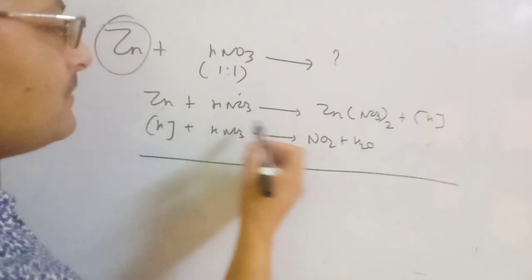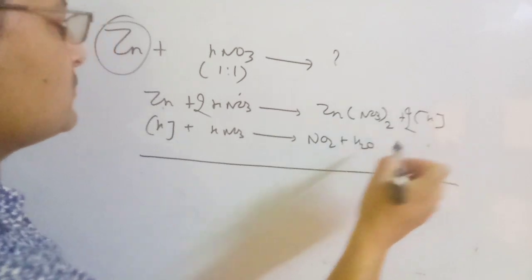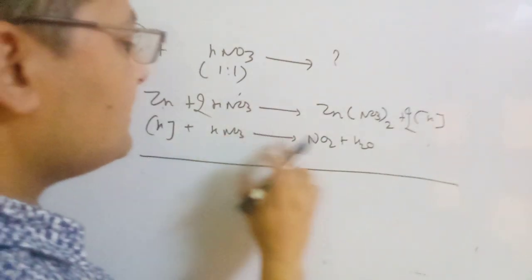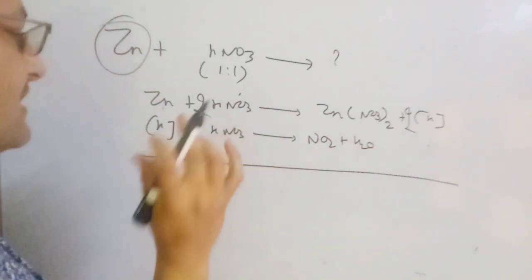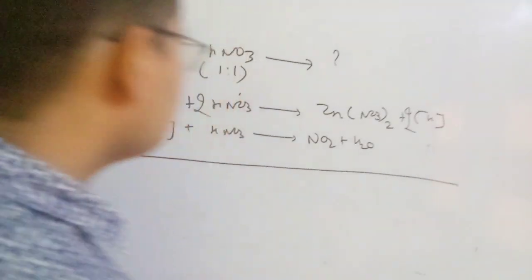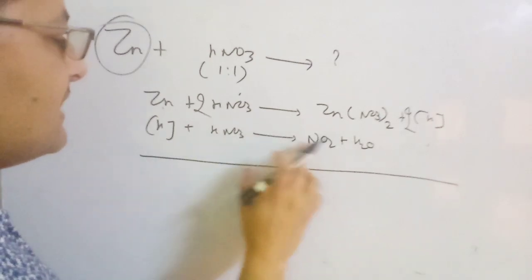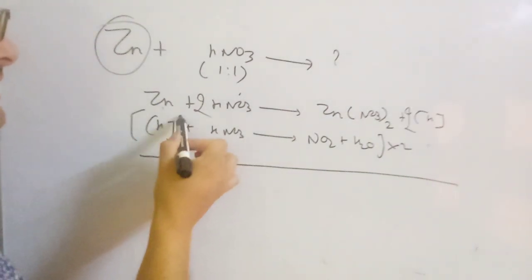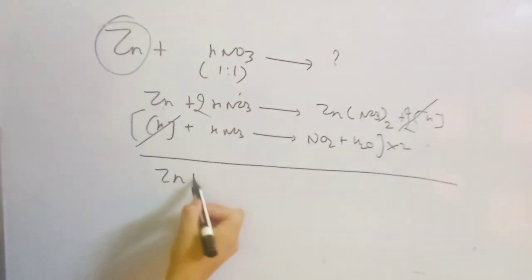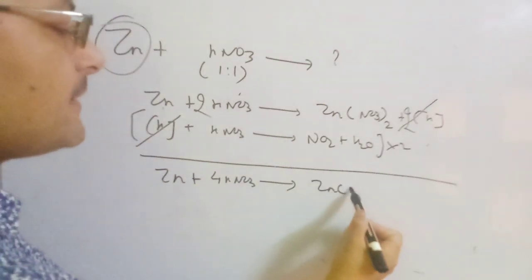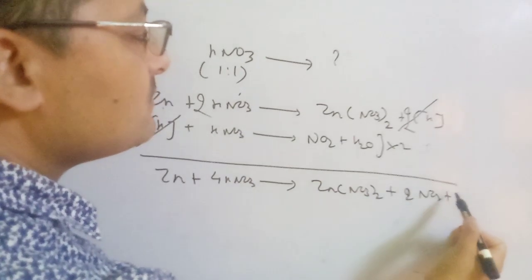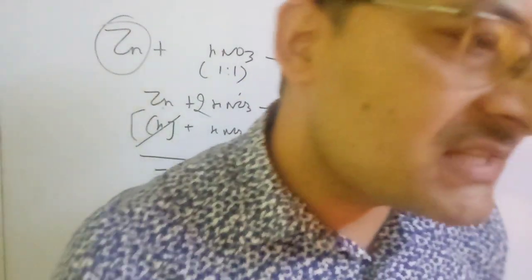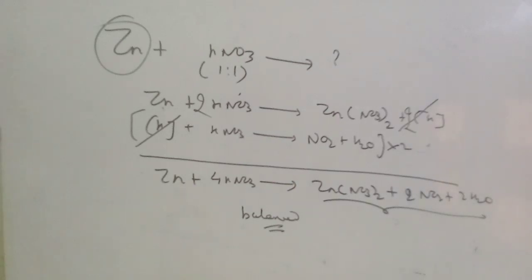This nascent hydrogen reacts with nitric acid and gives NO₂ and water. You balance it: put 2 for the nitrate ion, put 2 there — this reaction is balanced. Nitrogen 1:1, oxygen and hydrogen are balanced. You cancel the nascent hydrogen intermediates. Final product: zinc plus 4 HNO₃ gives zinc nitrate plus 2 NO₂ plus 2 water. This is the final product and balanced chemical equation.